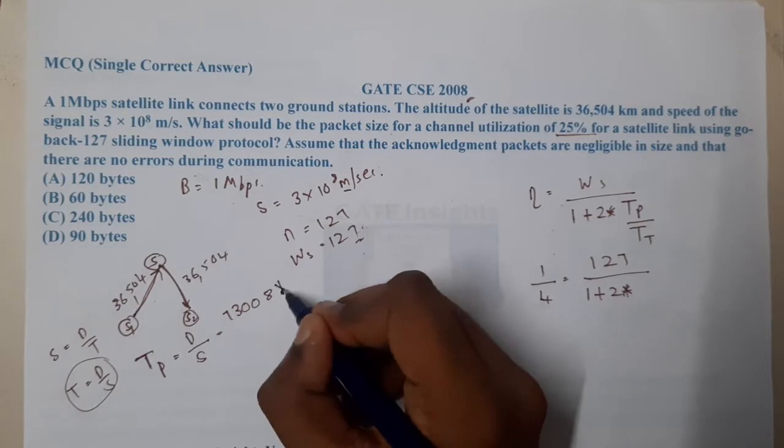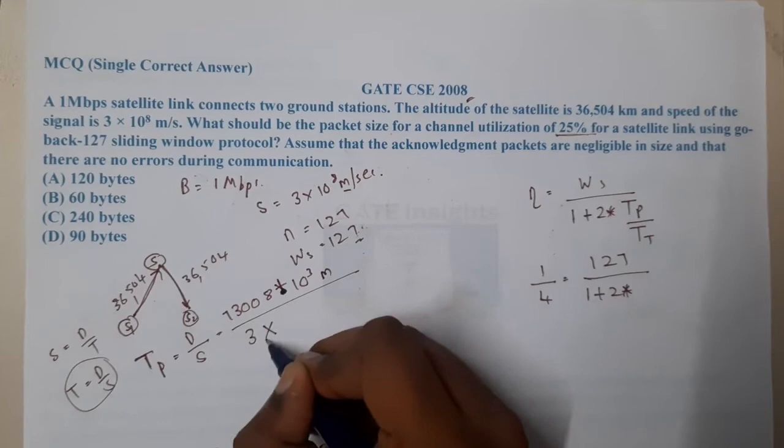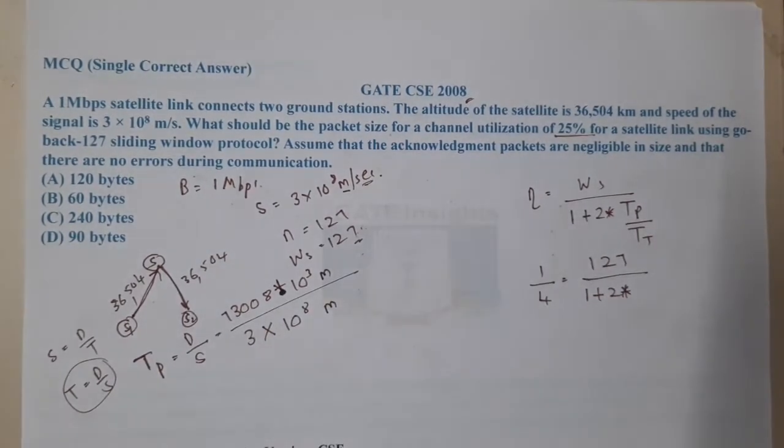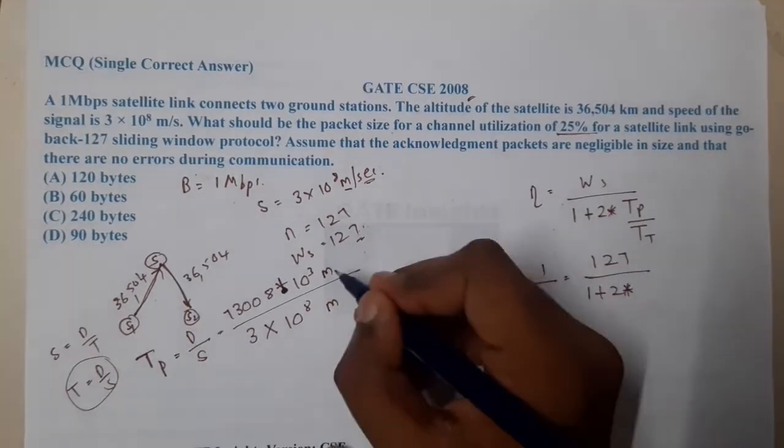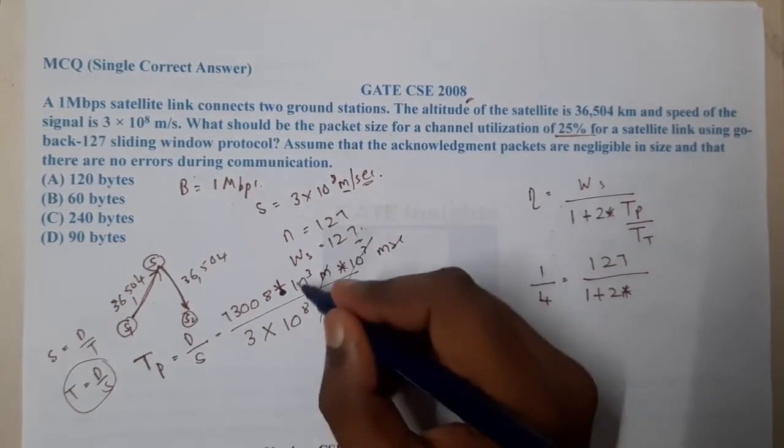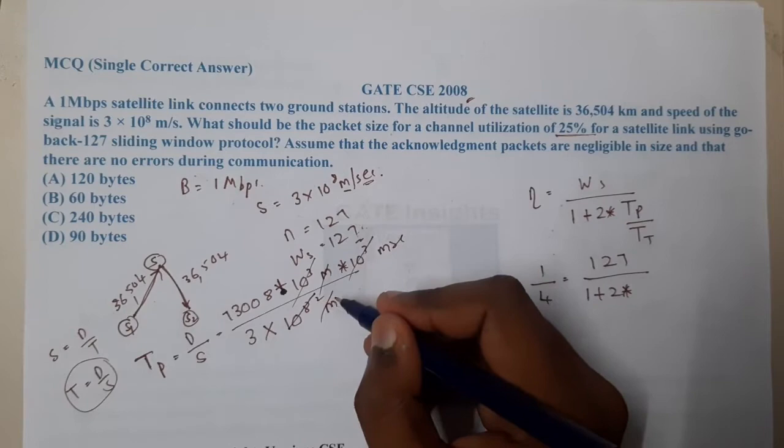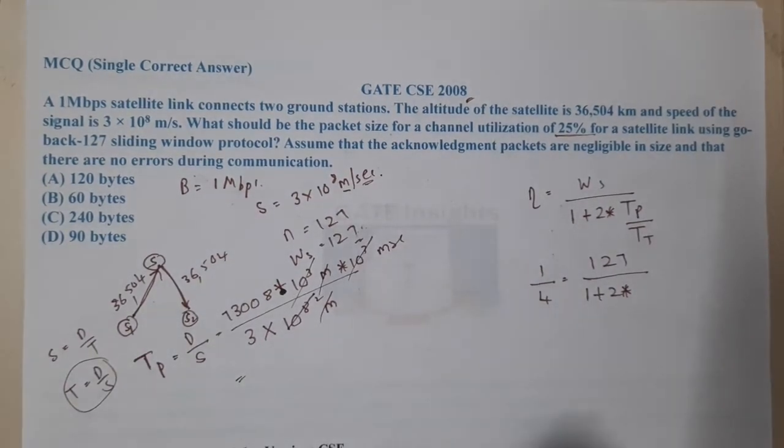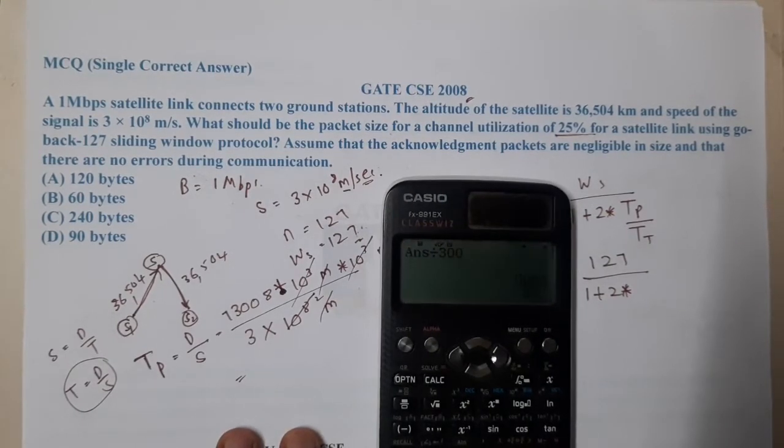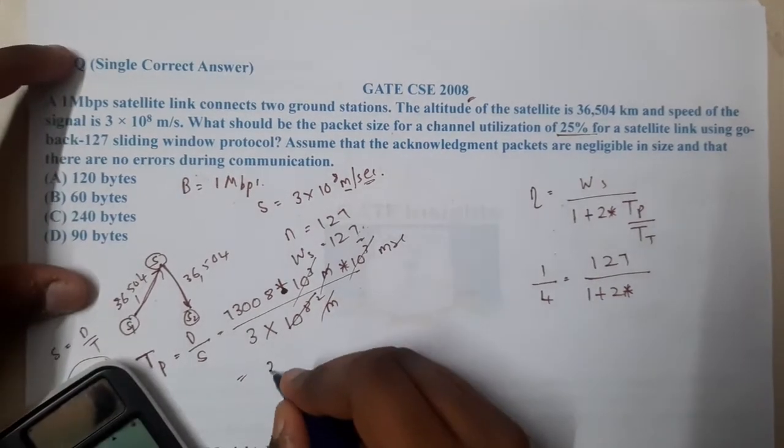Divided by the speed of 3×10^8 meters per second. Converting to milliseconds by multiplying by 10^3, these cancel out, leaving 73,008 divided by 300, which equals 243.36 milliseconds.